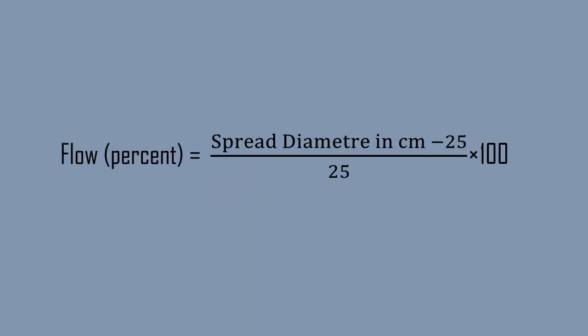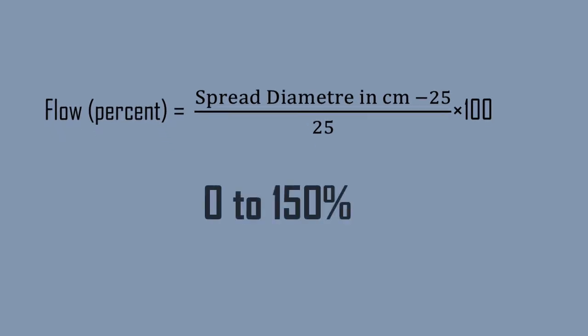Flow in percent is calculated by dividing spread diameter in cm minus 25, divided by 25, times 100. Thus, the value of flow percent is calculated from 0 to 150%.